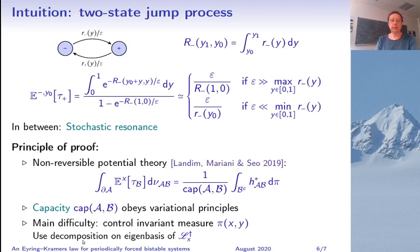Rather what I did was to decompose π in an eigen basis of the static generator that gives you a system of infinitely many coupled ODEs that can be studied, and that gives you the result. And the strange condition on the upper bound of epsilon is actually due to technical difficulties in controlling the invariant measure.